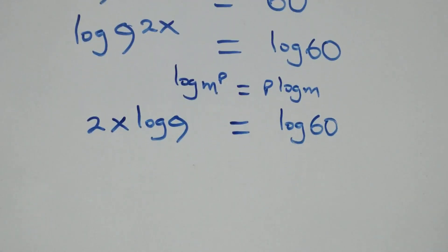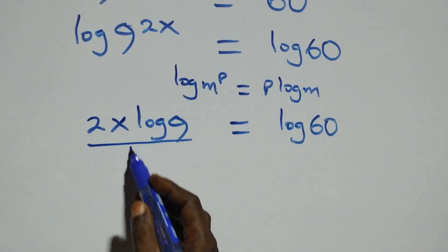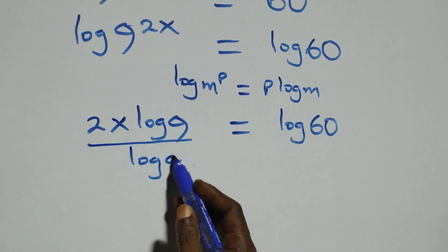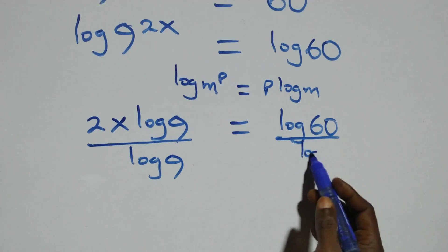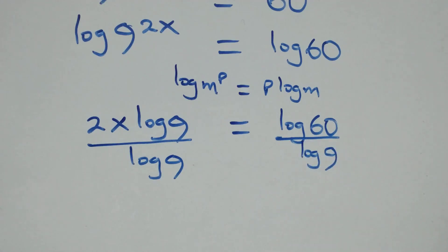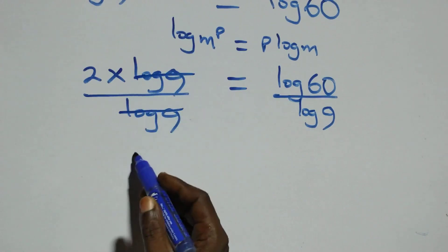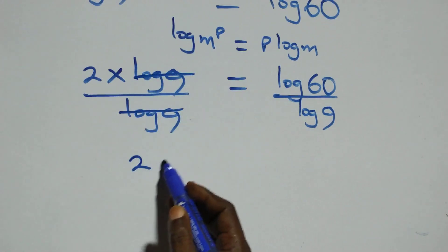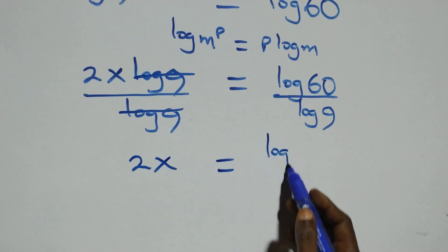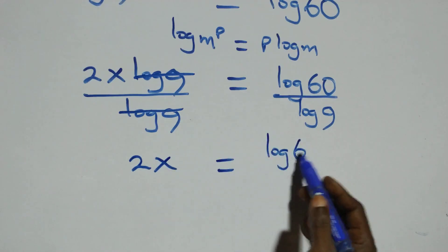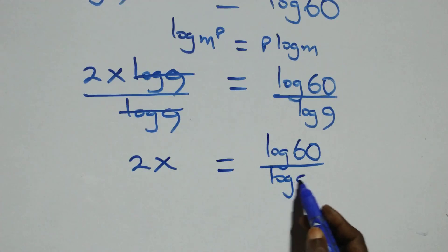The next step: we divide both sides by log 9. On the left side, log 9 cancels, and we have 2x left. So 2x equals log 60 over log 9.